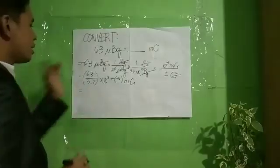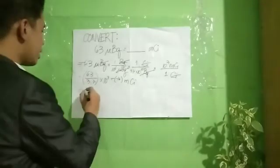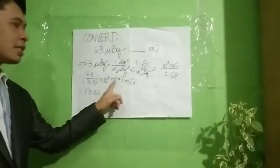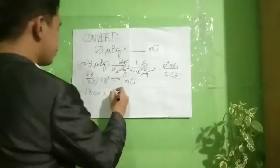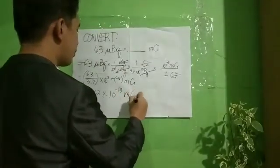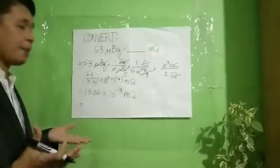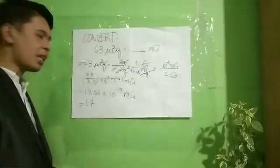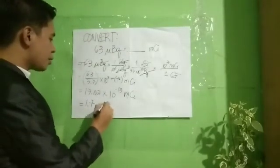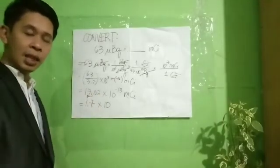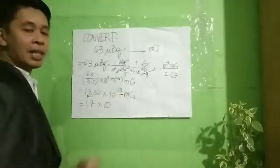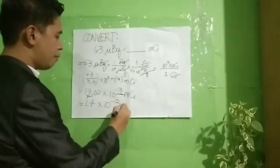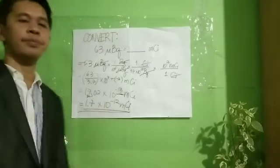63 divided by 3.7. That is 17.02 times 10. Positive 3 plus negative 16. That is negative 13 millicurie. Let's make this a proper scientific notation. One whole number followed by decimal point. 1.7 times 10. Since we move going to the left, we subtract from the exponent by 1. That will become negative 12 millicurie. This is our final answer.